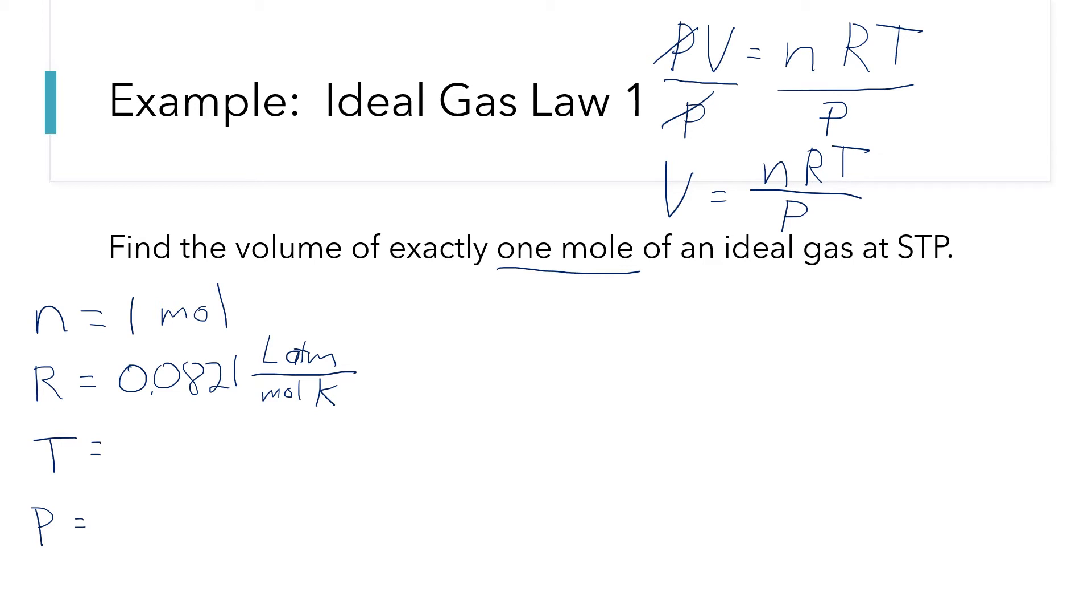For T and P, well, what we know is that we are at STP, standard temperature and pressure. So our temperature is zero degrees C, but we don't want to use Celsius. We've got to use Kelvin. So that'll be 273 Kelvin. And our pressure is standard pressure, which is 760 Torr, but we can't use that. We've got to use atmospheres. So that's going to be one atmosphere.